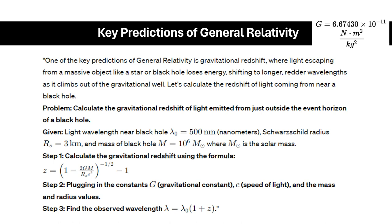Let's calculate the gravitational redshift using the formula: z = [(1 - 2GM/Rsc²)]^(-1/2) - 1. You can use c = 3.0 × 10⁸ m/s for the speed of light.